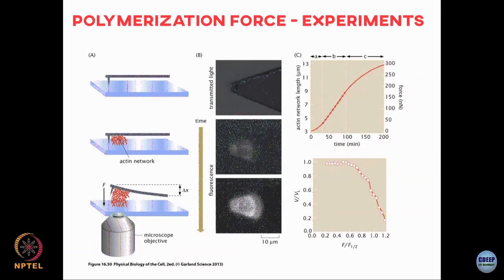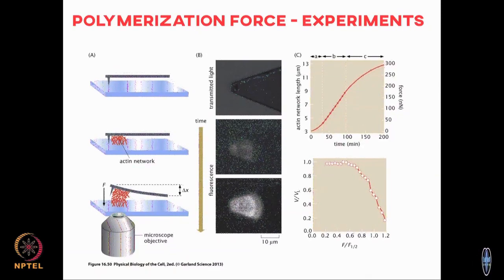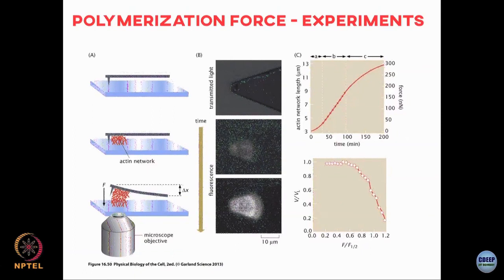Similarly, you can do experiments with actin networks rather than a single filament. There is an AFM experiment where as the actin network polymerizes it pushes and bends the AFM cantilever tip upward. You can plot the net length of the network as a function of time — in the intermediate regime you see roughly linear growth — and estimate the velocity of the load (the AFM cantilever). Plotting velocity as a function of force again shows a non-linear relationship: roughly constant velocity for small forces, then dropping to zero, consistent with these models.